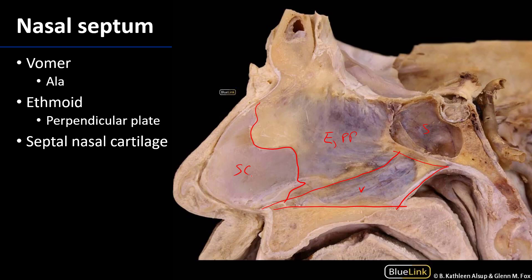This isn't a perfectly sagittally sectioned individual because we don't have the completeness of the nares here, but we can see at least on this part — this would be the columella, the nasal columella — and that is going to be just inferior to the septal cartilage of the nose.